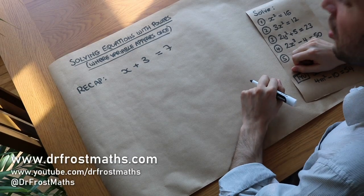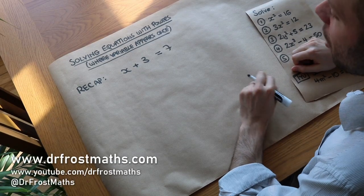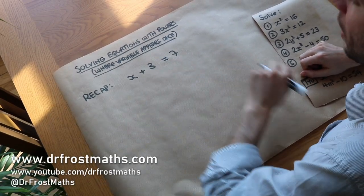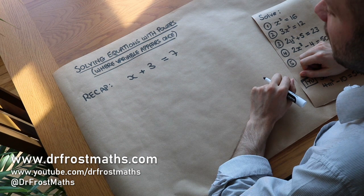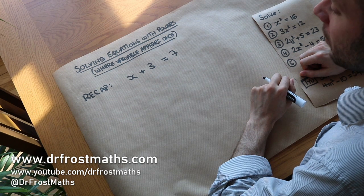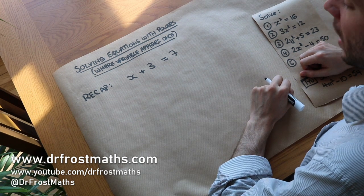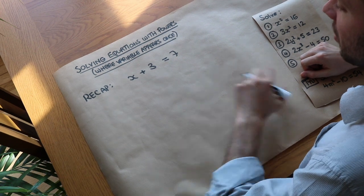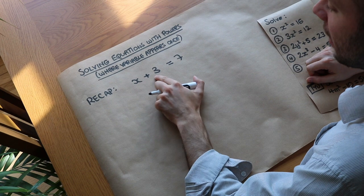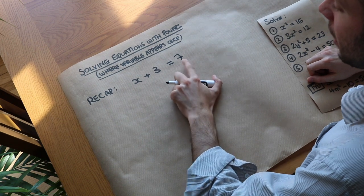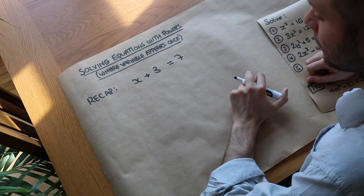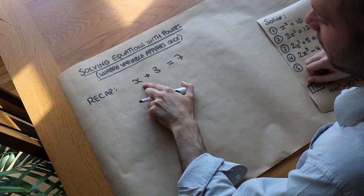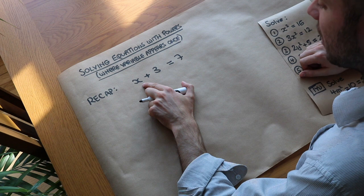Hello and welcome to this brief video on solving equations with powers where the variable appears once only. As a quick recap, how do we solve equations? If we had x plus 3 equals 7, we want to get x on its own — that's what it means to solve this equation.